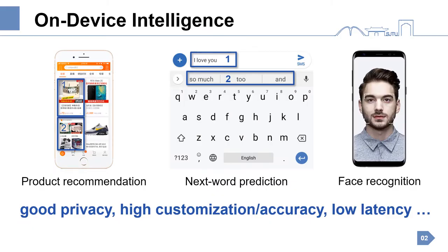I will first introduce some background. Nowadays, more and more machine learning tasks are offloaded from the cloud to mobile devices, such as product recommendation, weather prediction, and fish recognition. The motivations behind this trend include good privacy, high customization and accuracy, as well as low latency.